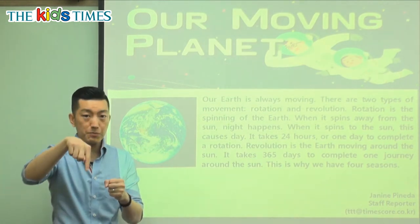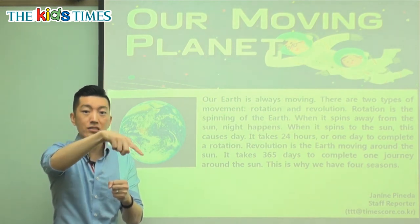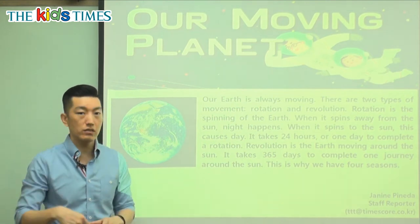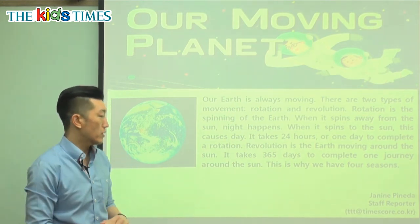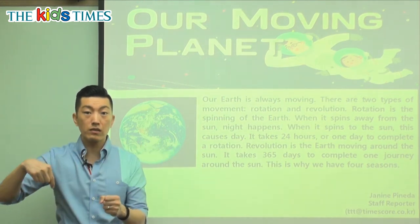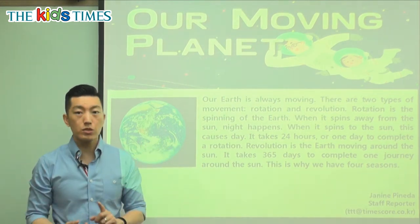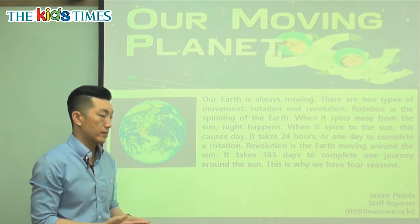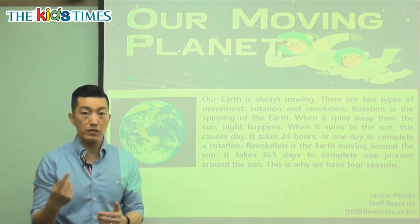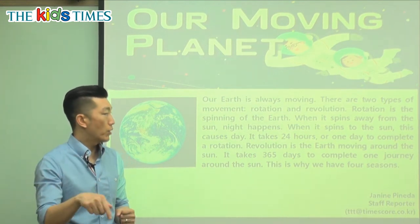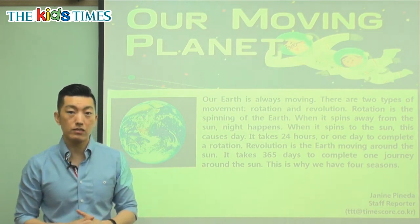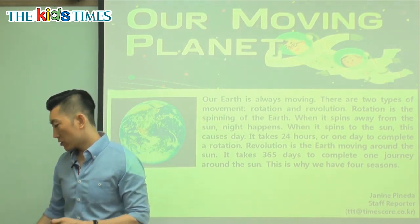Every day the Earth rotates — it takes 24 hours. And as it rotates, it is also revolving around the Sun, and it takes one year to complete this revolution. This is why we have four seasons. As you go around and around the Sun, that's when we have summer, spring, fall, and winter. So rotation causes day and night, and revolution causes different seasons. Those are the two movements of our beautiful planet Earth.